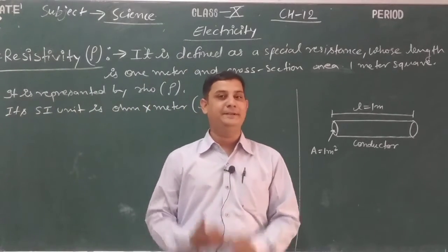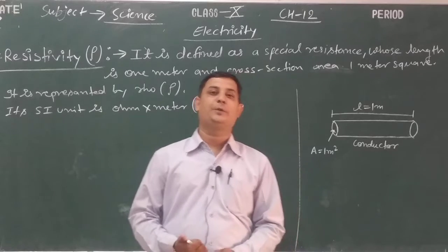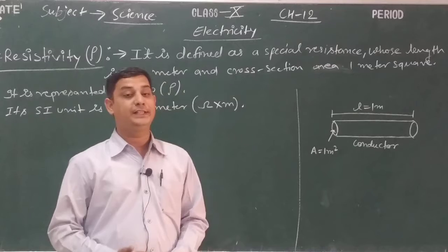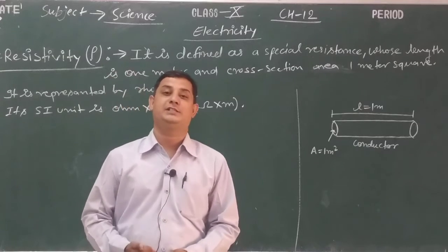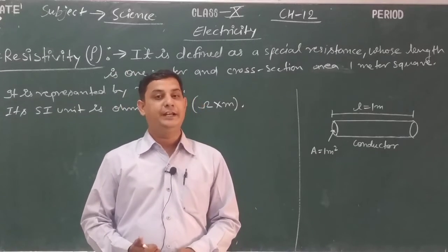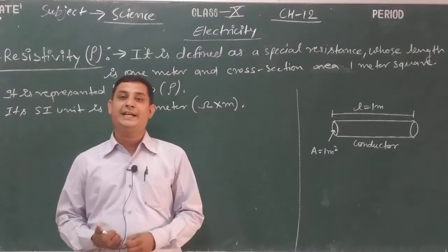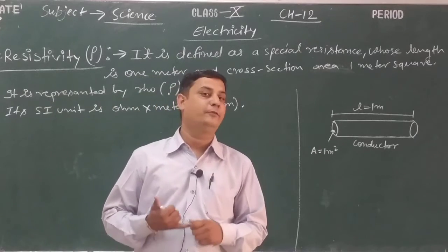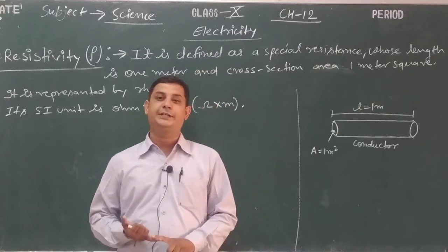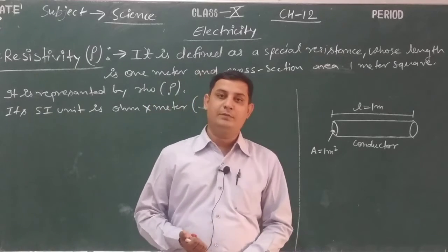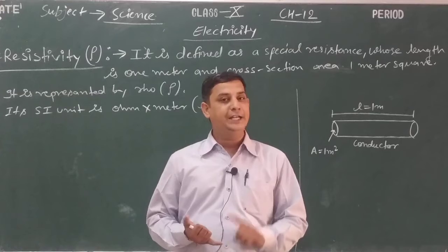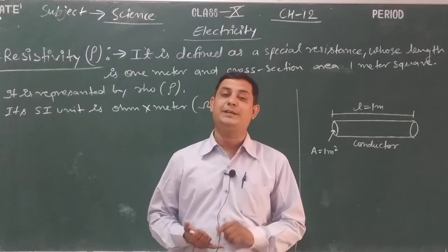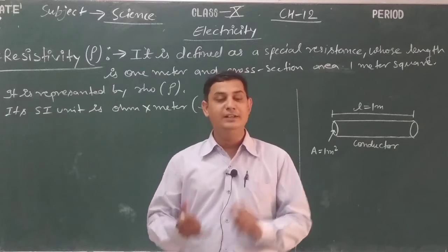Good morning friends. In the previous video we completed the topic of resistance and Ohm's law slope, with the factors on which the value of resistance is dependent. We have learned that the value of resistance depends on four factors: the length of the conductor, cross-section area of the conductor, the nature of the material, and temperature.